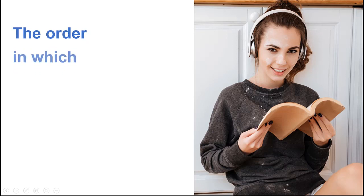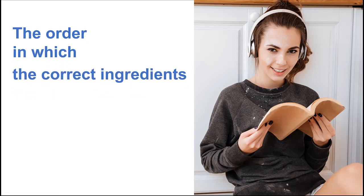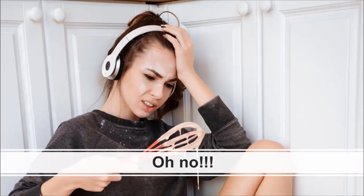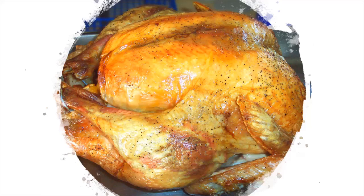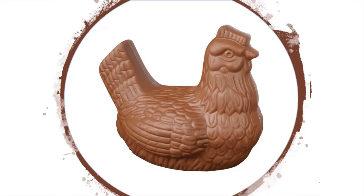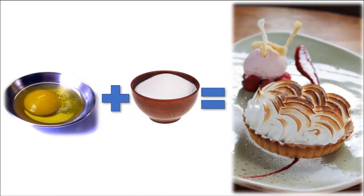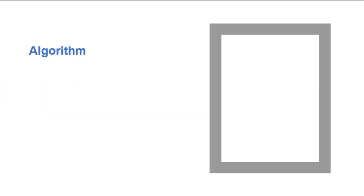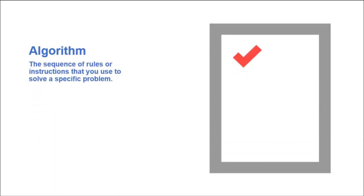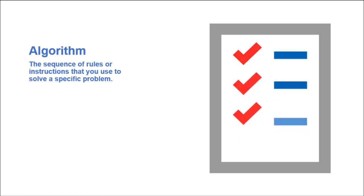The order in which the correct ingredients are mixed is also very important. What? That doesn't matter, does it? I thought you could just mix it all together at the same time. You can, but you won't always get the desired result. For example, if you mix the egg whites and sugar together, you might end up with meringues. I see your point here — totally different texture and outcome. The ingredients, or the inputs, and the order in which we perform operations on them, is like the order of instructions that comprise an algorithm.